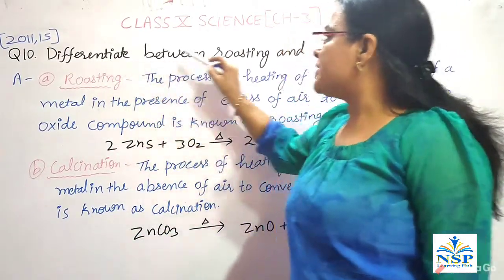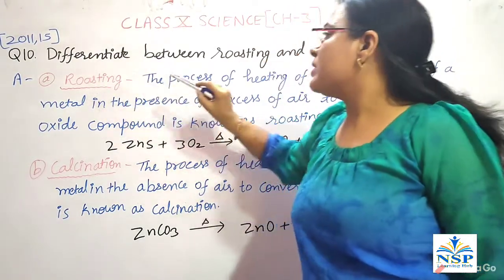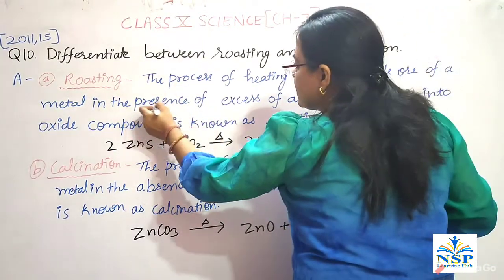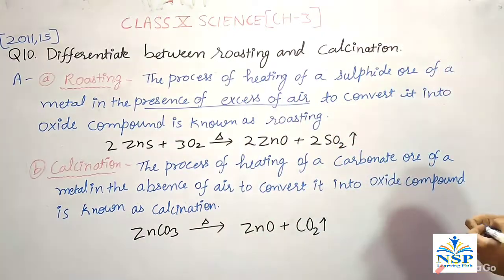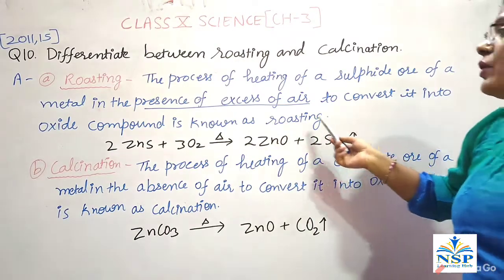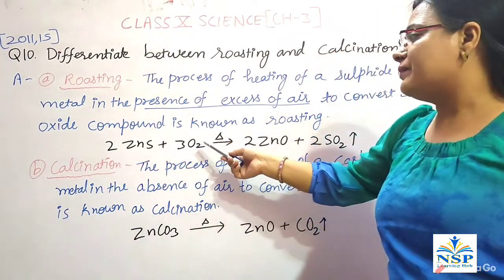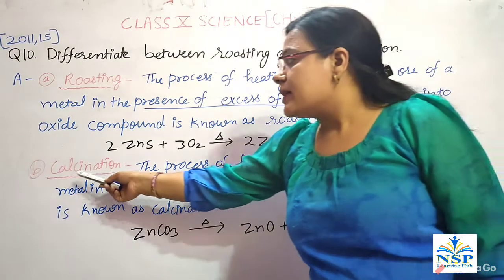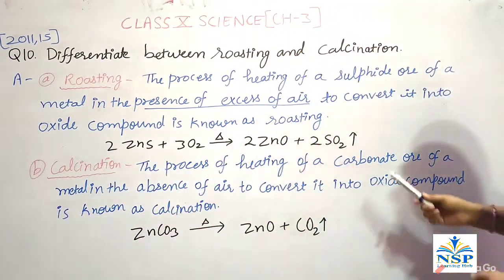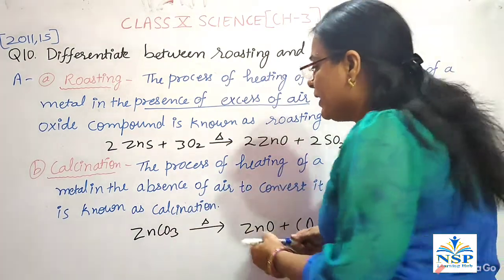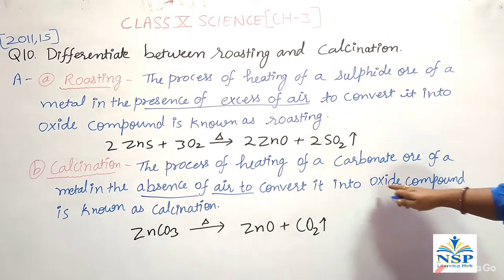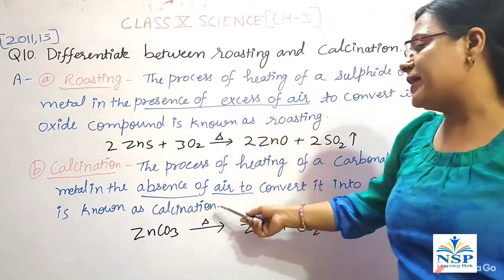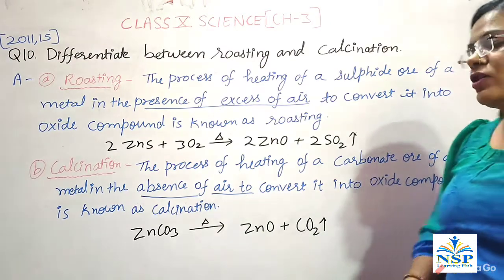Our next question: differentiate between roasting and calcination. Roasting is the process of heating a sulfide ore of a metal in the presence of excess air to convert it into an oxide compound. For example: ZnS + O₂ → ZnO + SO₂. Calcination is the process of heating a carbonate ore of a metal in the absence of air to convert it into an oxide compound. For example: ZnCO₃ → ZnO + CO₂.